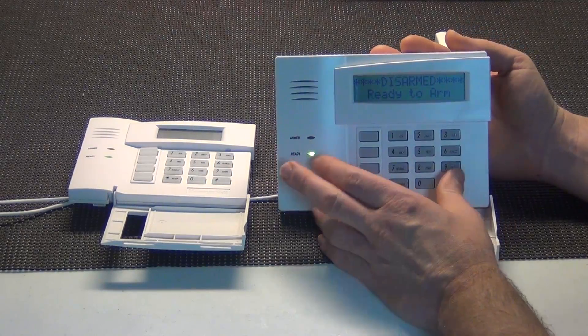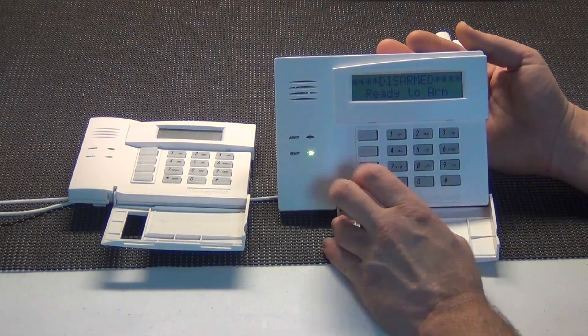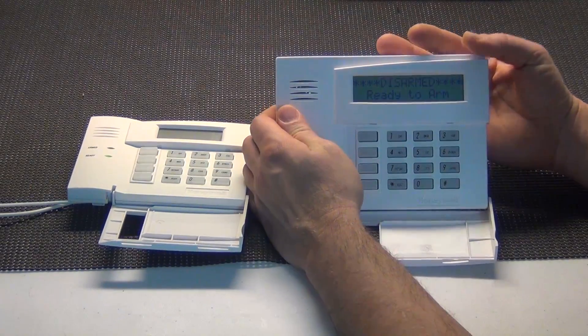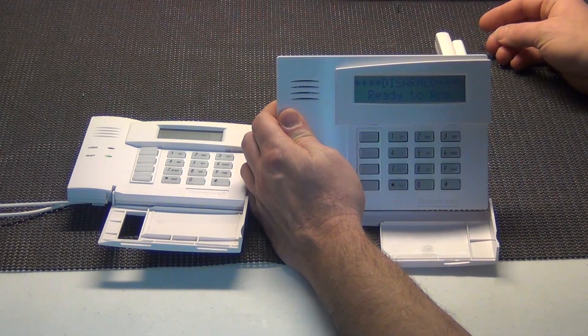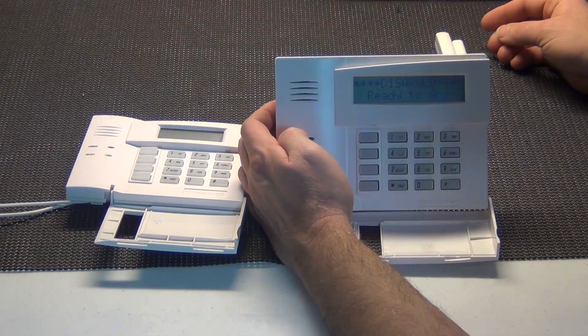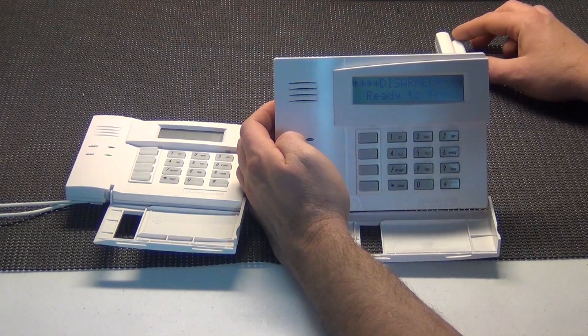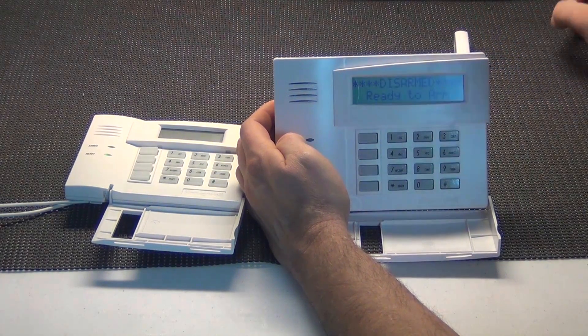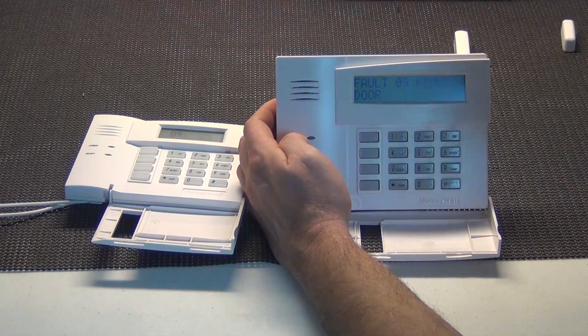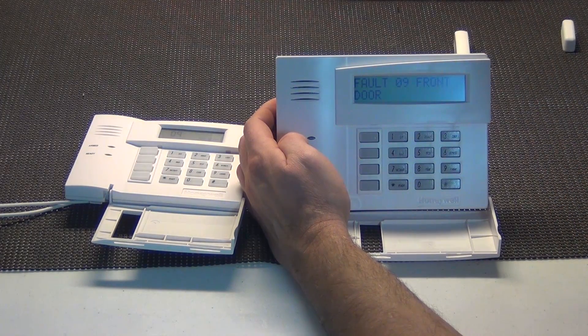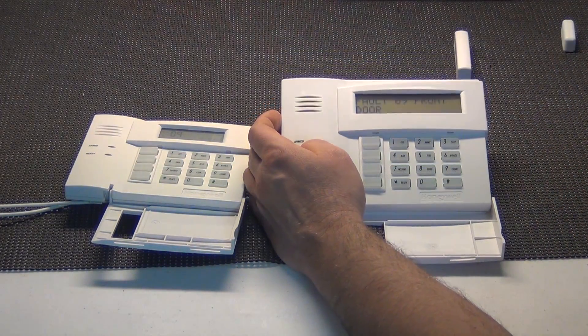As you can see here, it says disarmed or ready to arm on our 6160. I have a contact back here that we learned into this system so we could show you the differences in the display. Let me get it better so you can see it here. I'm going to trip this zone. And as you can see, it reads out fault 09 front door. That's on your 6160.